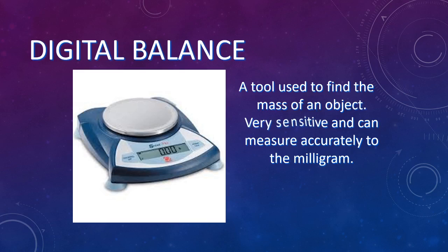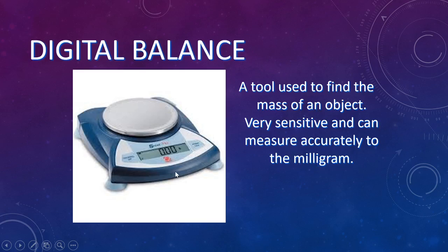Another type of balance we have is a digital balance. In a lot of cases we'll be using this rather than the triple beam or the pan balance. It's very sensitive and can accurately measure up to the milligram. You just place your object on the pan — make sure it's zeroed before you put the object on — and then it measures it. If you have a liquid or powder substance, you would put a weighing boat down on the pan before you place your specimen.